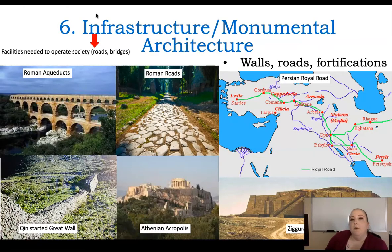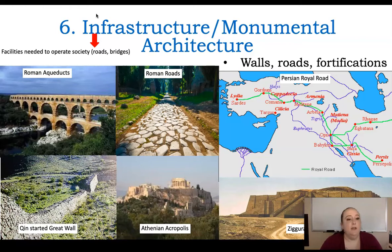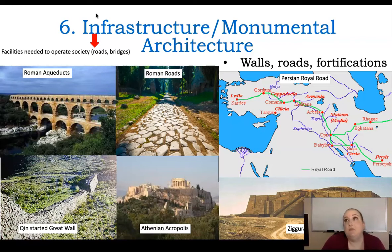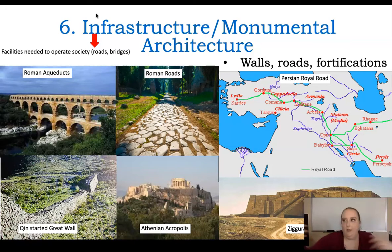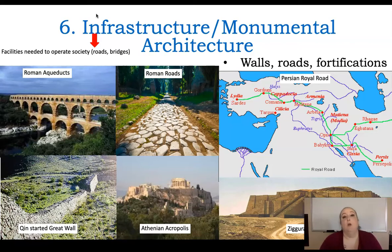The last of the six is infrastructure and monumental architecture. A lot of these things are still around today — the Great Wall, ziggurats, Roman roads, aqueducts. We built on these ideas; for example, the American highway system was inspired by the German autobahn, which itself was influenced by the Roman road network.